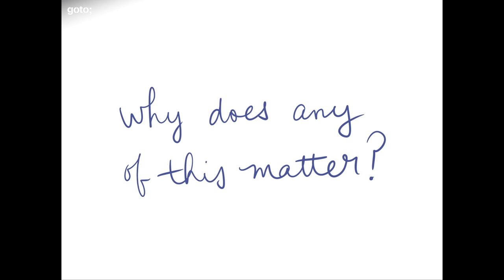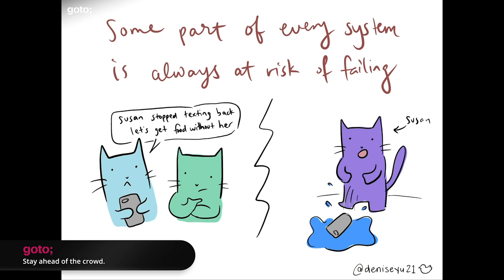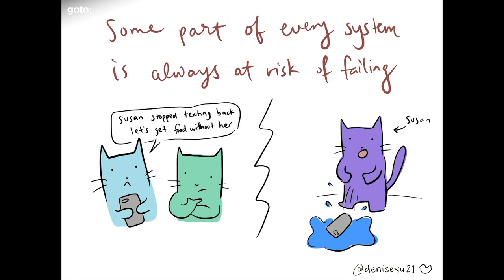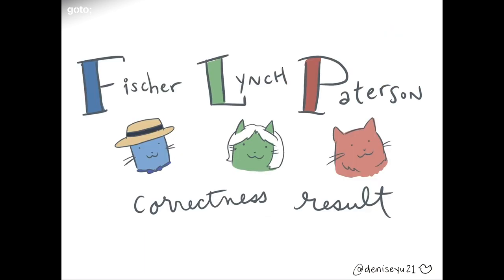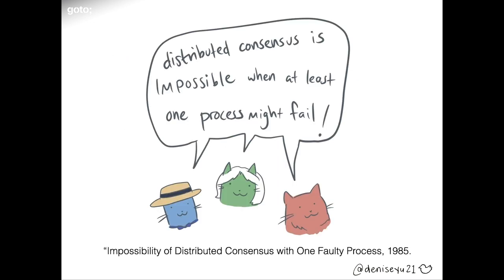Why am I telling you any of this? The practical reality is that we can't guarantee that every node in the system will always be online and reachable, so every single distributed system is at some constant risk of failure. This whole discussion points to the Fisher-Lynch-Paterson correctness result — the landmark paper from 1985 — which basically states that distributed consensus is impossible when at least one process might fail. That's the super boiled-down version; there's a lot here to unpack.